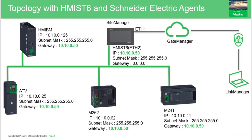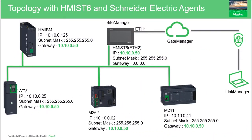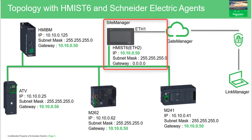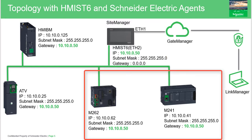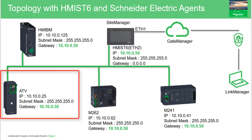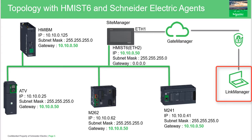Here is the architecture used in this video. The HMI ST6 is running the site manager. The Ethernet 1 port allows connection to the internet and the gate manager; the Ethernet 2 port is connected to the local network with the different equipment. This HMI ST6 is also running an HMI application with EcoStruxure Operator Terminal Expert. There are two PLCs running EcoStruxure Machine Expert — one is an Altivar to control a motor — and the last device is an industrial PC running a SCADA application with EcoStruxure Machine SCADA Expert. In this configuration, each device is an agent.